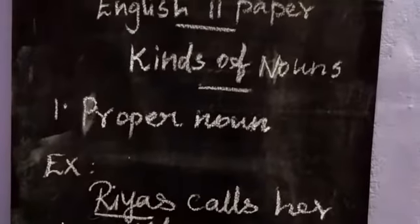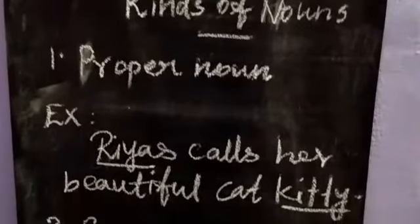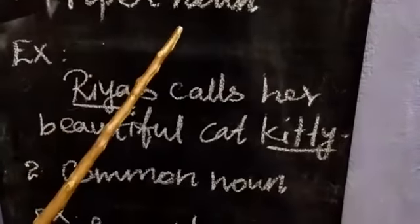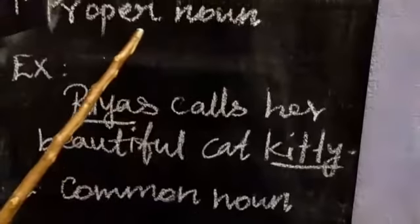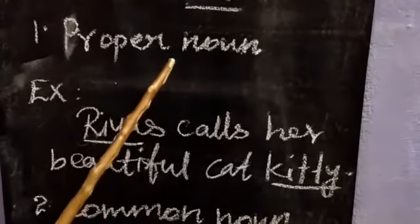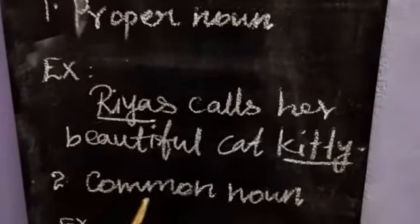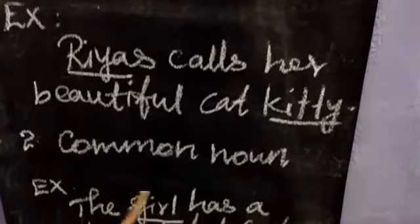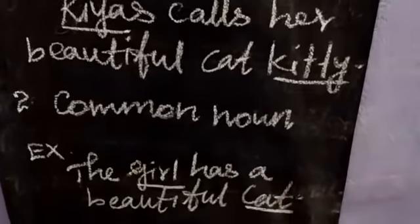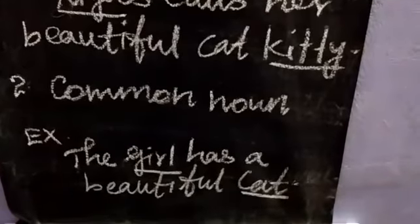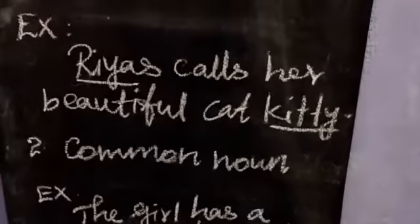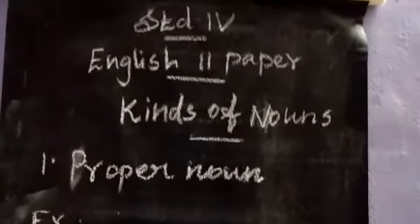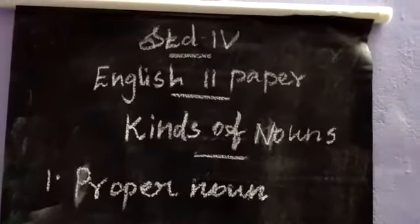Once again: a proper noun is the name of a particular person, place, animal, thing or event. Common nouns are names given in common to all things, places and persons. The remaining two kinds of nouns — collective noun and abstract noun — we will see in the next class. Thank you.